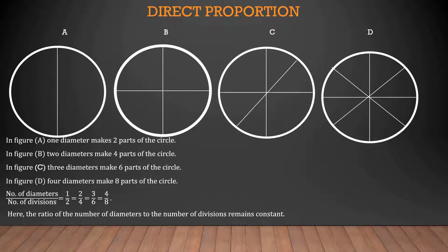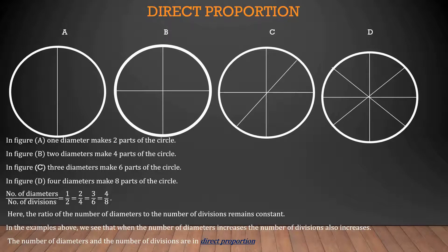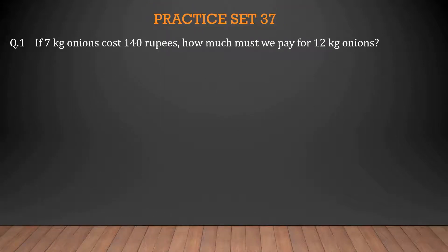Here the ratio of the number of diameters to the number of divisions remains constant. In the examples above, we see that when the number of diameters increases, the number of divisions also increases. The number of diameters and the number of divisions are in direct proportion.